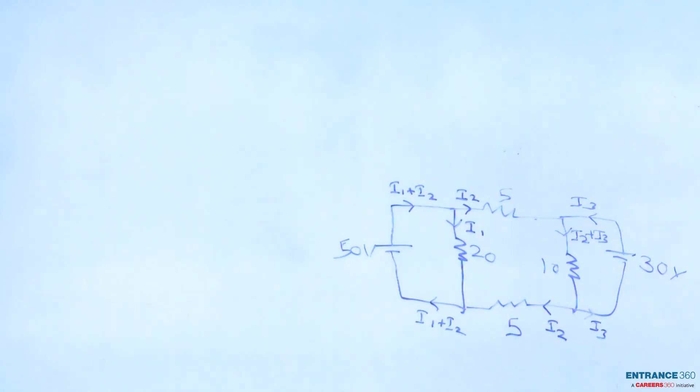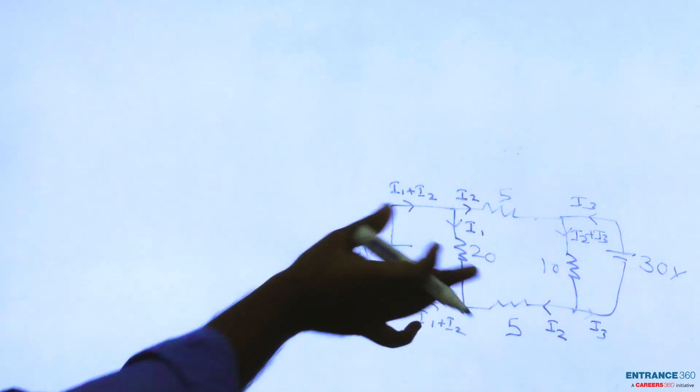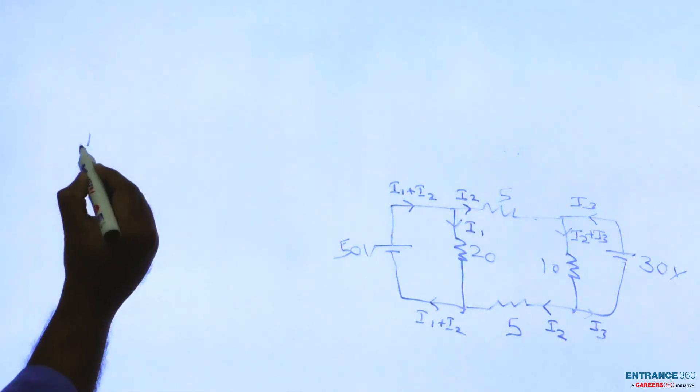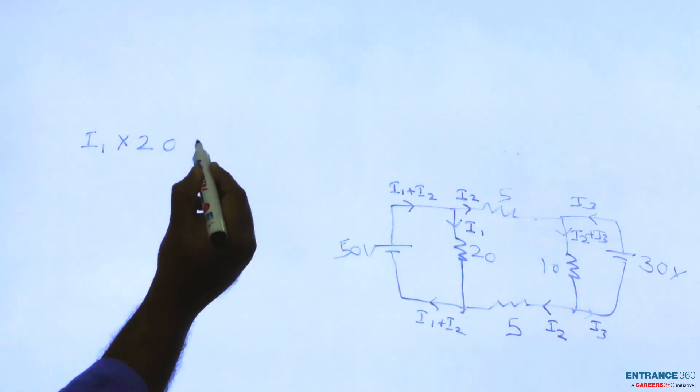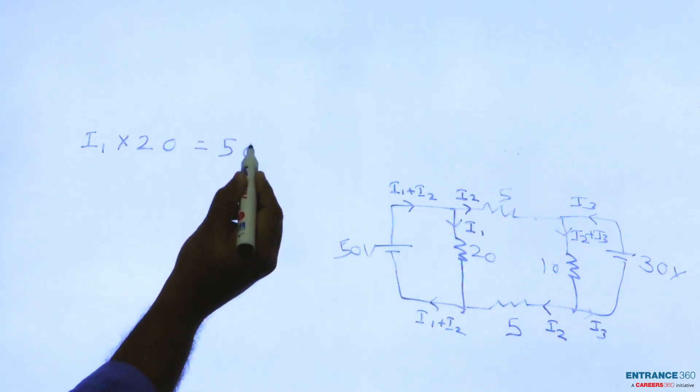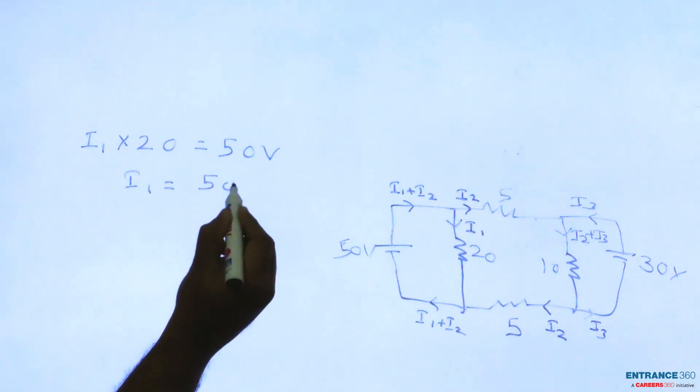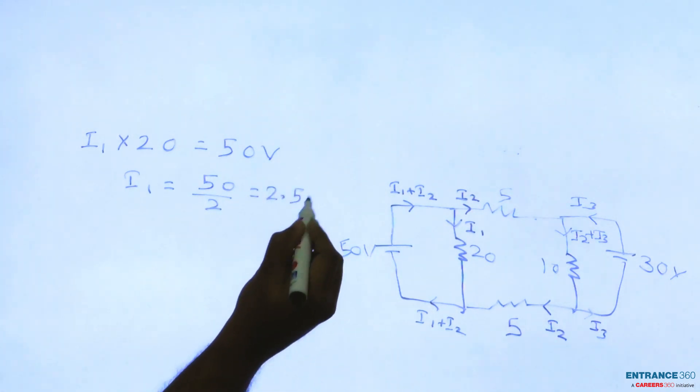Now let's see that this 50 volt supply is parallel to this 20 ohm, so we can tell that I1 times 20 equals 50 volts, or I1 equals 50 by 20 equals 2.5 ampere. This is our I1.